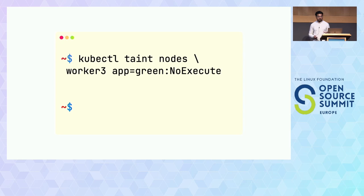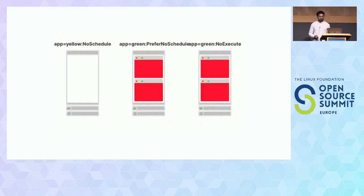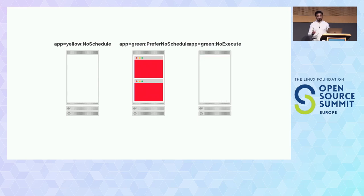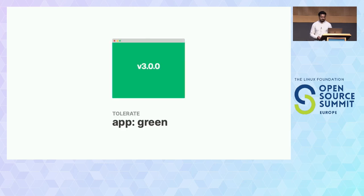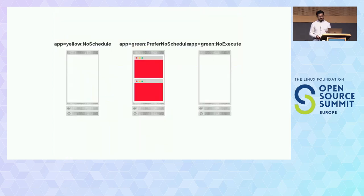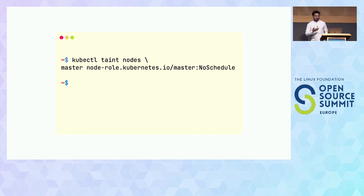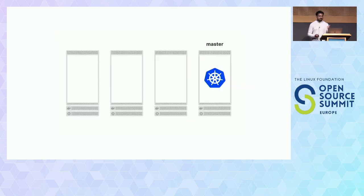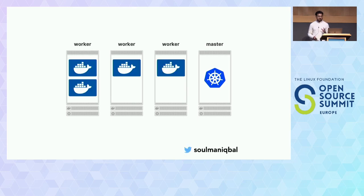If you decide to create a deployment with a green pod and say toleration app=green, you tolerate the label so the effect is ignored — it comes in and lives there happily. It's common practice to taint the control plane (or master node) with NoSchedule, because you don't want workloads running on the control plane — it's already busy running multiple components. When you spin up a cluster, the control plane doesn't run any worker workloads; all workloads run on the worker nodes.